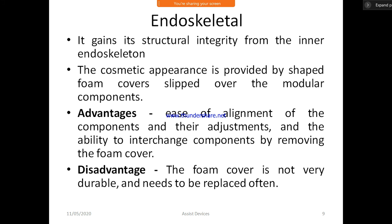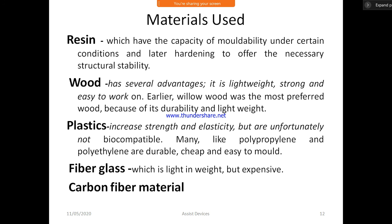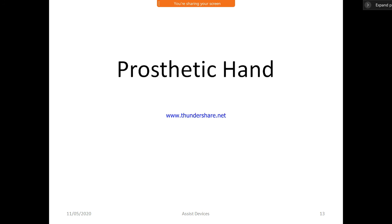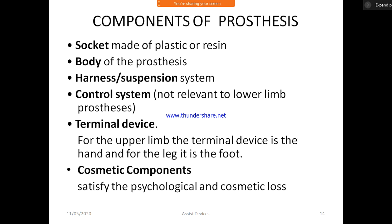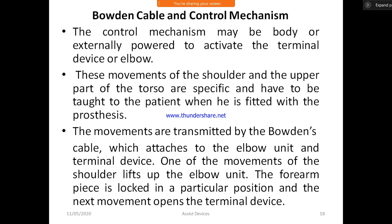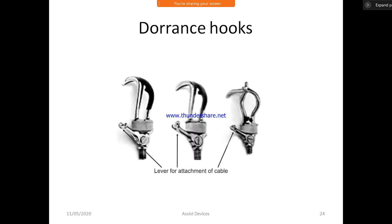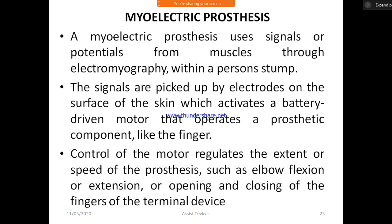Lack of proprioceptive feedback compared to the body-powered harness system. These prostheses cannot control fine, rhythmic, and fast movements; there is poor control of co-contracting muscles and poor motor control. Myoelectric components may get dysfunctional in water or around magnetic or electric fields. The cosmetic protective gloves get dirty very easily, and when components malfunction, a specialist is needed to rectify the issue.